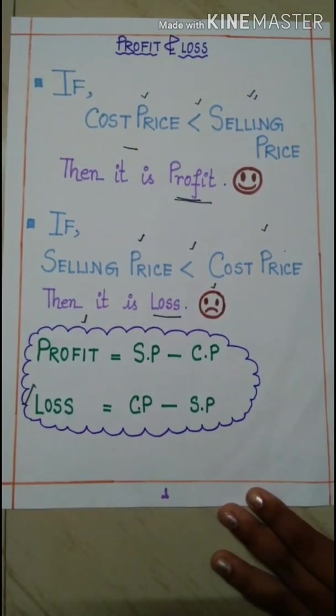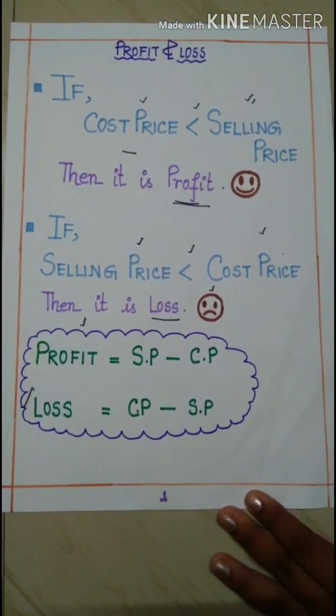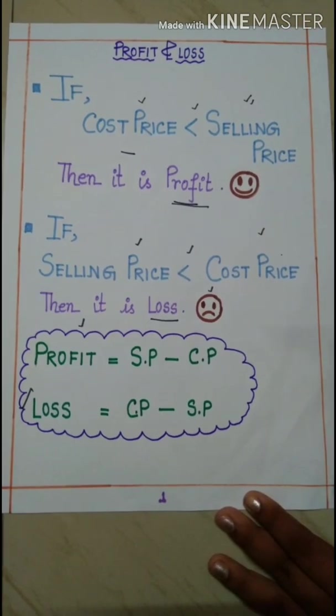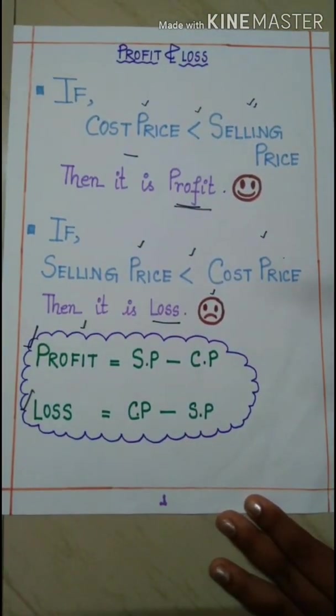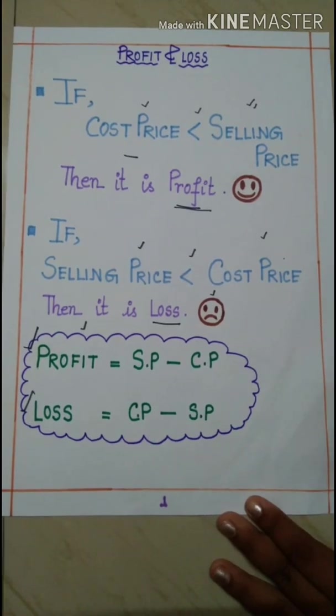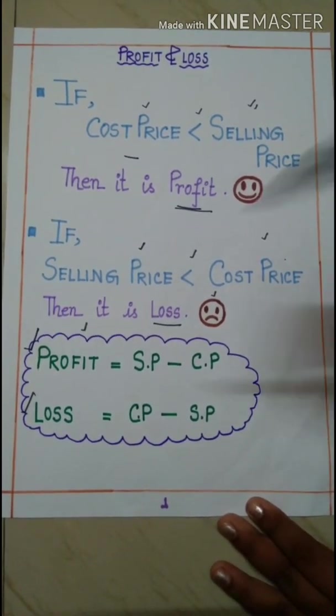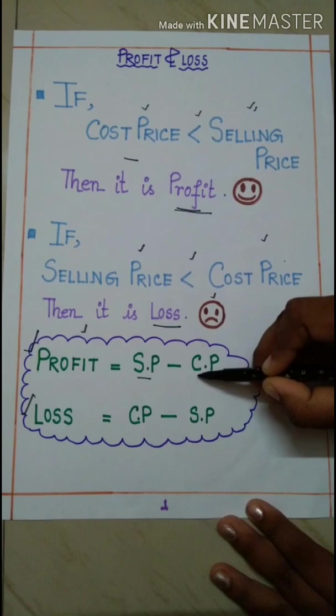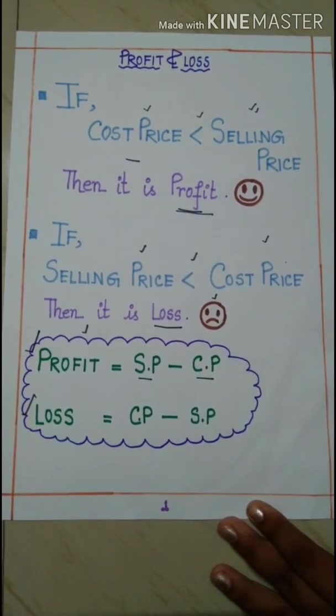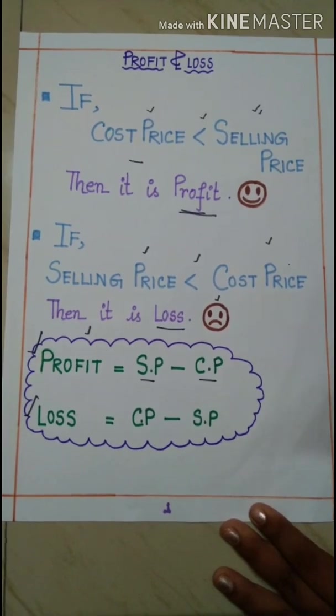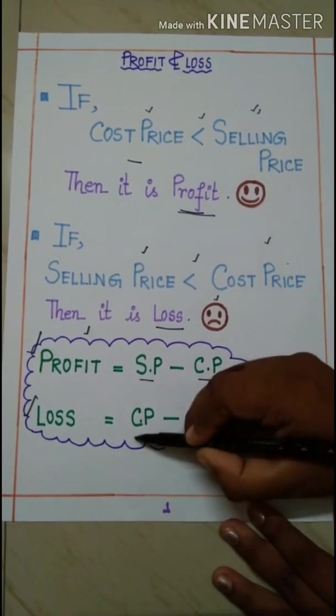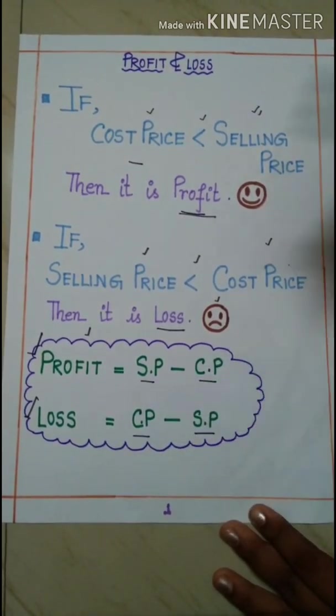So two formulas are there. That is profit equals to SP minus CP. When it will be profit, we can find out the amount of profit by using the formula profit equals to SP minus CP. And we can find out the formula of loss by this formula that is loss equals to CP minus SP.